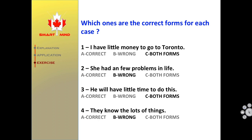Number 3: 'He will have little time to do this.' Both forms are correct: 'He will have little time' or 'He will have a little time.' Number 4: 'They know lots of things.' The use of 'the' before 'lots' is wrong — the correct form is 'lots of things.'